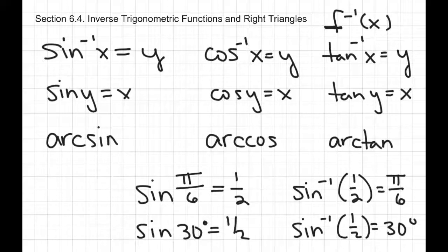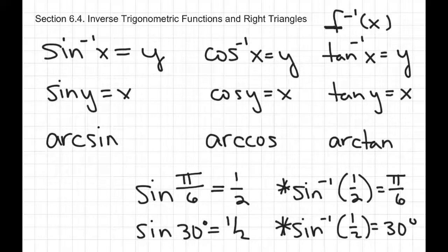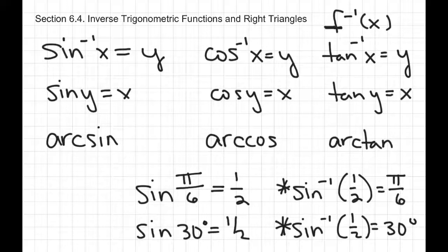What answer you get in your calculator will depend on what mode you're in. If you're in degree mode and you do an inverse sine, you would get an answer in degrees. If your calculator is in radian mode and you do an inverse sine, the answer you get will be in radians. Remember, your calculator won't say pi over 6 — it will give you the decimal equivalent of 3.14159 divided by 6.